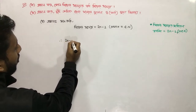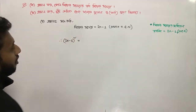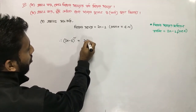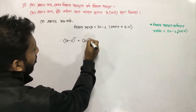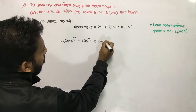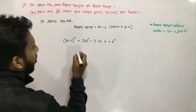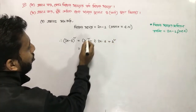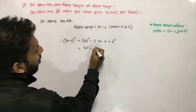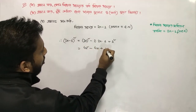So, 2n minus 1, whole square, is equal to what? That is: 2n whole square minus 2 dot 2n dot 1 plus 1 whole square. 2n whole square is 4n squared minus 4n plus 1.